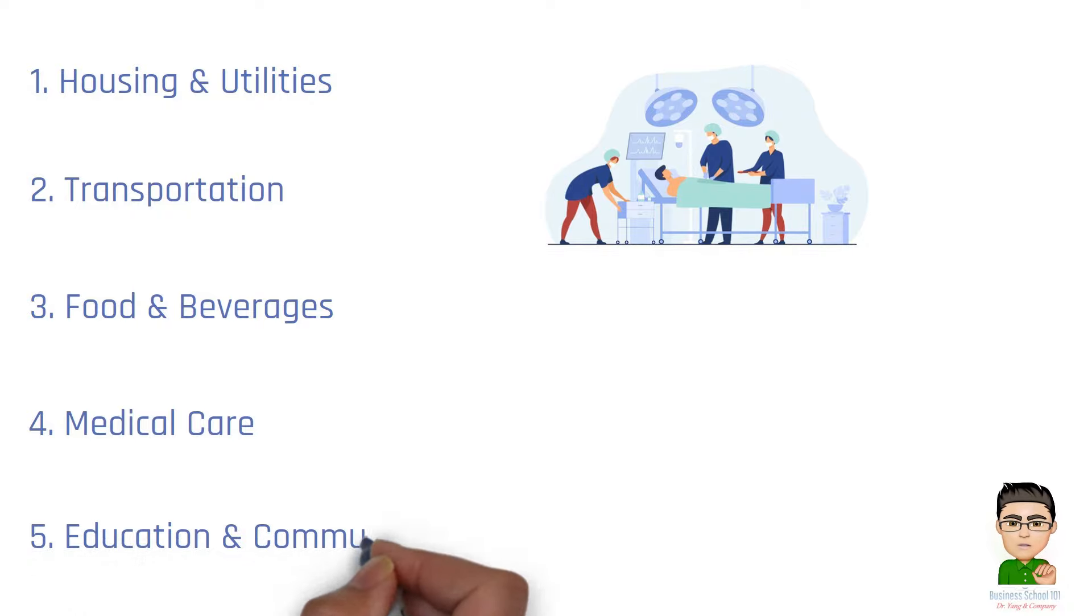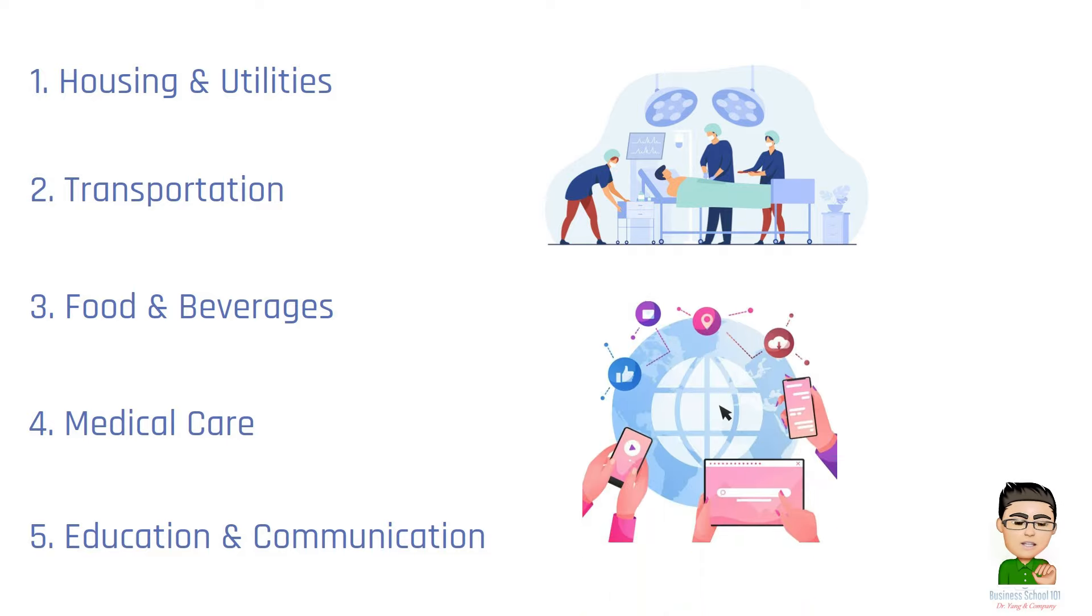Number 5. Education and Communication. This includes expenses on education, such as school fees and supplies, as well as costs related to communication, like phone and internet services.